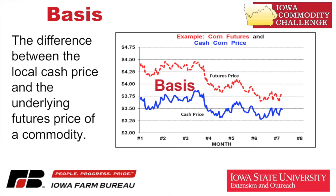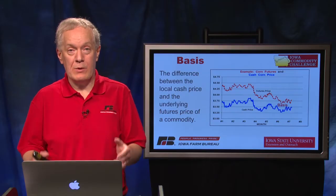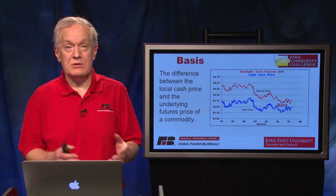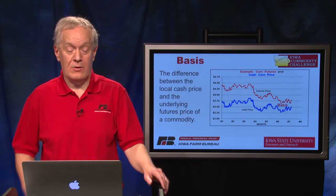As you can see, early on in that chart we had wide basis, and then later on those two markets came together. So they had a lower or smaller basis. It's important to be able to estimate your basis, and through the Iowa Commodity Challenge we have workbooks and things that can help us track that local basis.